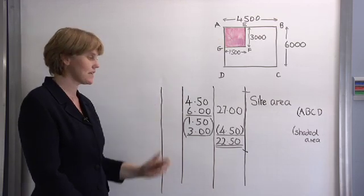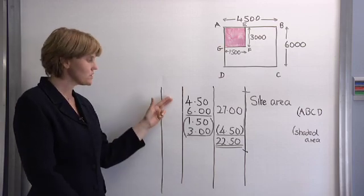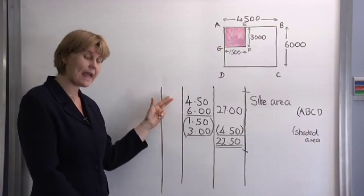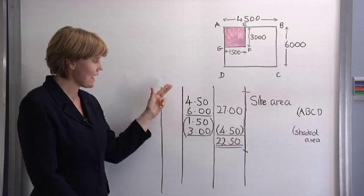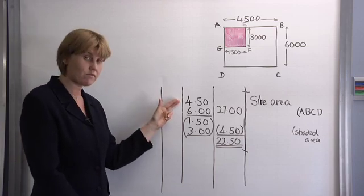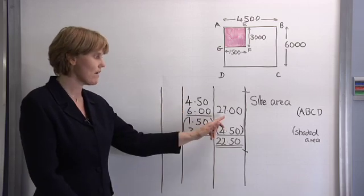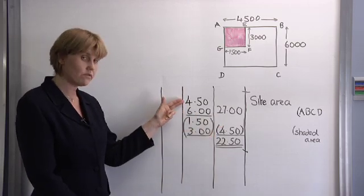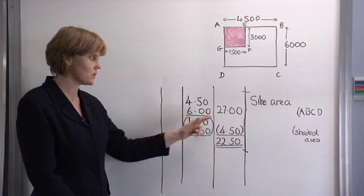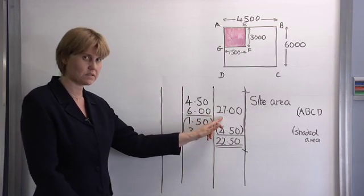Let's have a look at our take-off. So first of all our site area ABCD, we have 4.5 metres in length by 6 metres wide giving us a total area of 4.5 by 6 metres equals 27 metres squared.